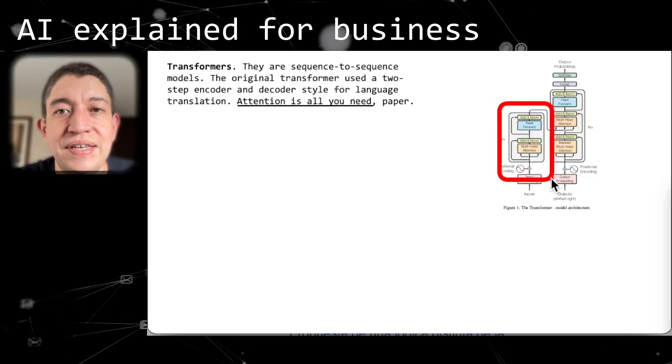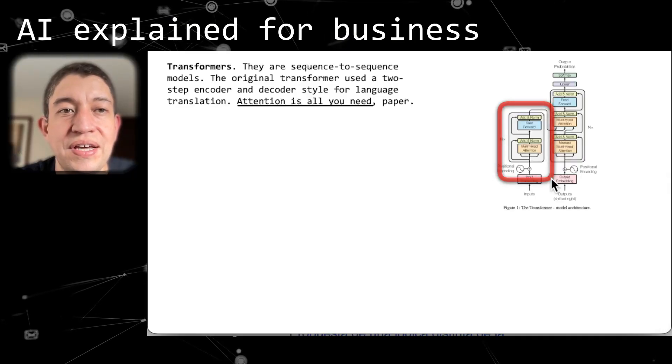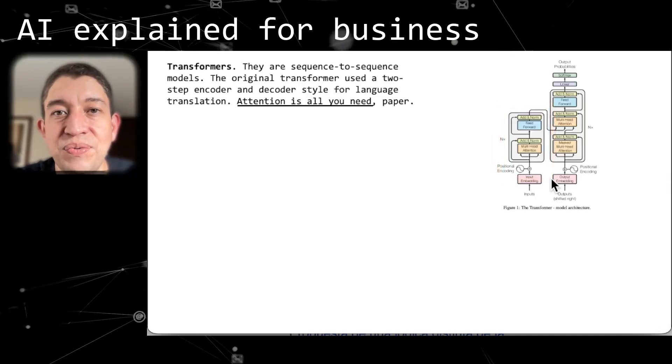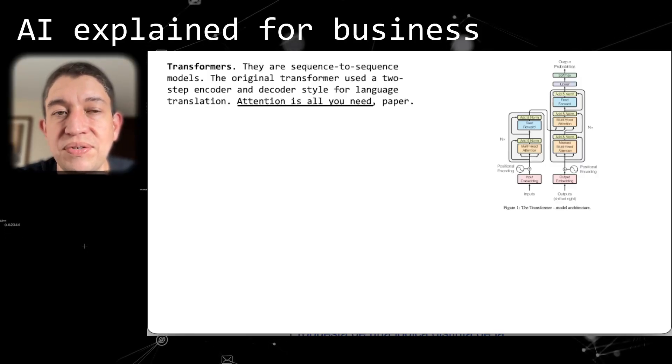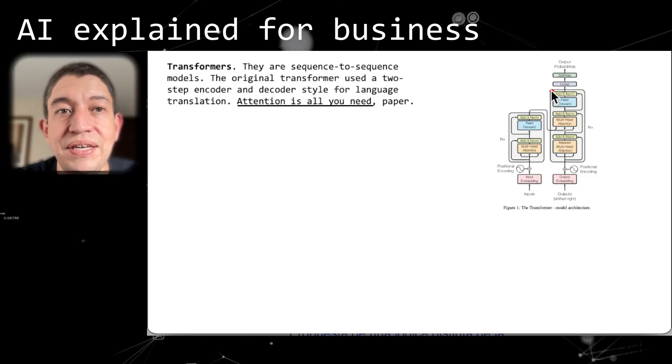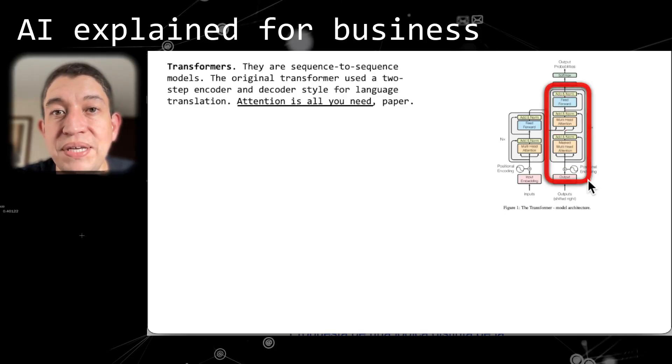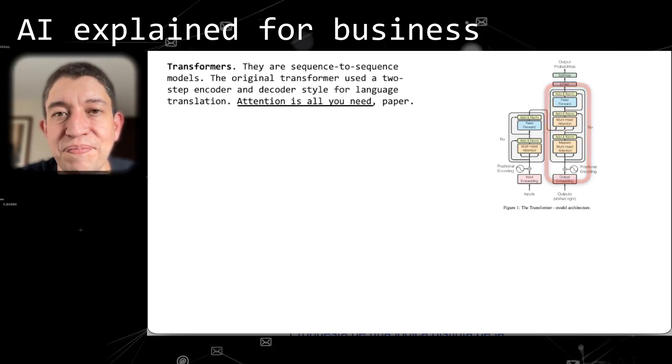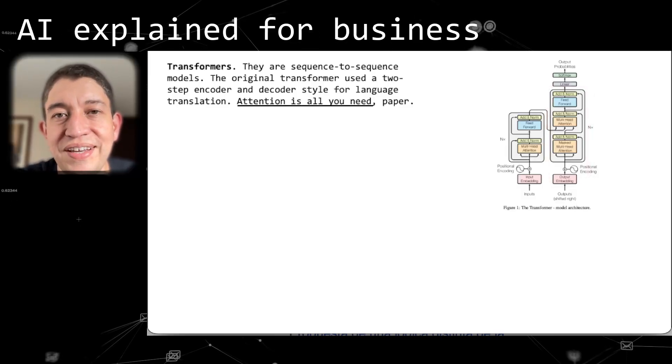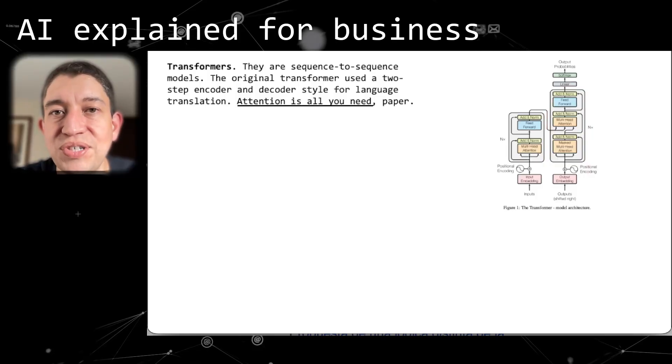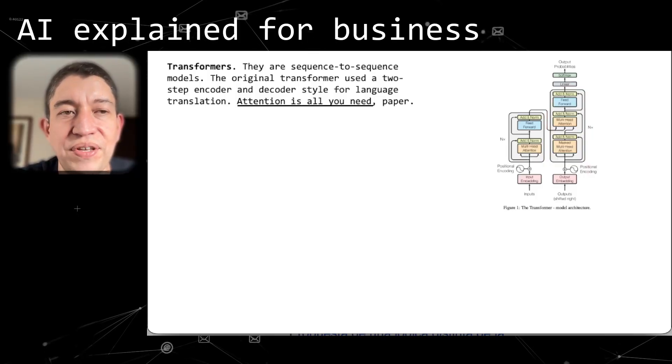The first one is the encoding piece, which is on the left, which basically transforms your question or your need to translate a message into basic tokens that can be used by the transformer. Then it's decoded with the second piece of that model to get the response in the new language. That was the original intent of the transformer.